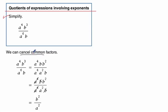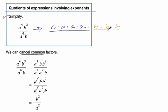We're going to cancel common factors. We could look at this the longer way if it helps you think through it. We could say that a to the fourth b to the third is a times a times a times a, times b times b times b. That's all divided by — in dark blue — a to the sixth: a times a times a times a times a times a. And down below we just have one b.